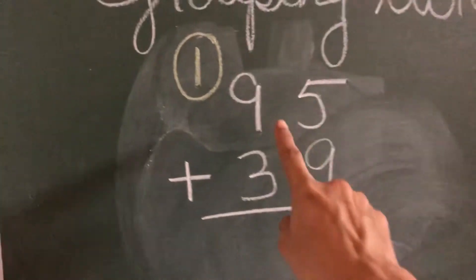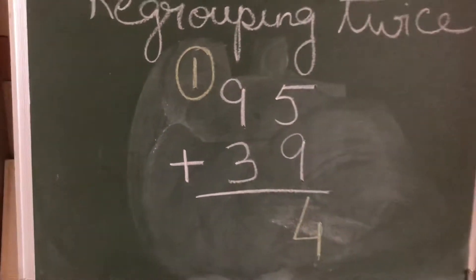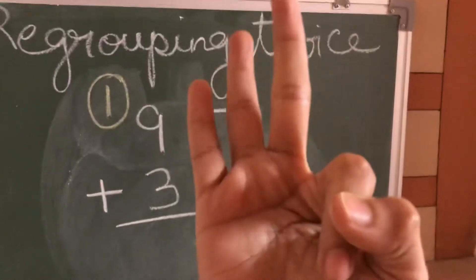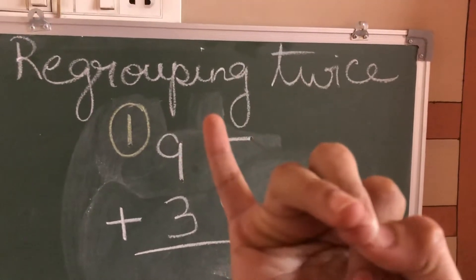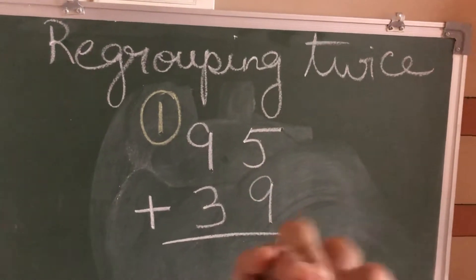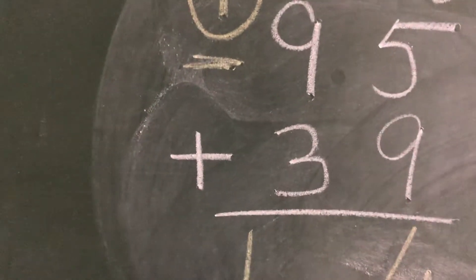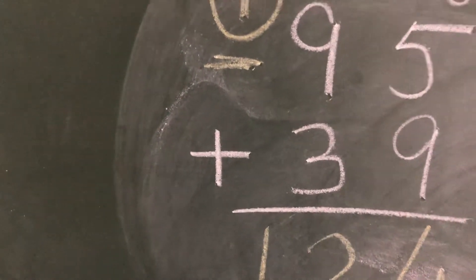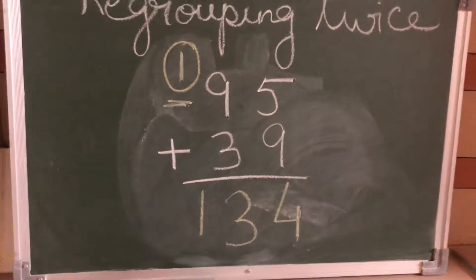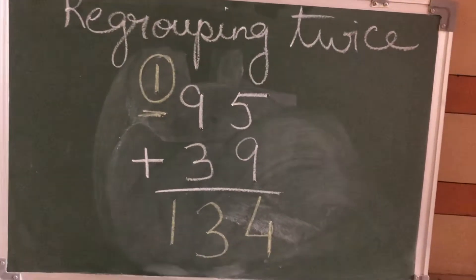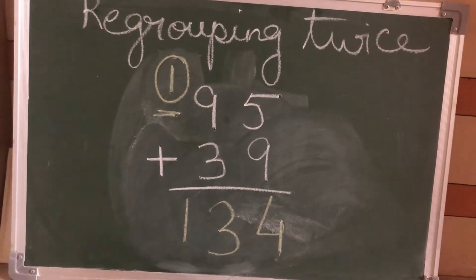Now 9 plus 3. 9 in your mind, 3 fingers out: 10, 11, and 12. Now with that I will also add this one, that is 13. 134 is the answer. So this is what is called regrouping twice.